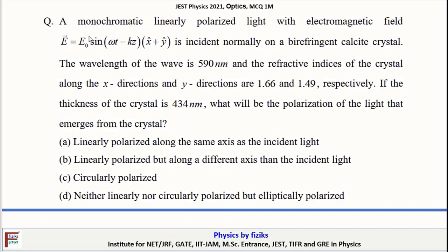A monochromatic linearly polarized light with electromagnetic field E = E0 sin(ωt)(x̂ + ŷ) is incident normally on birefringent calcite crystal. The wavelength of wave is 590 nanometer and refractive indices of the crystal along x direction and y direction are 1.66 and 1.49 respectively. If the thickness of the crystal is 434 nanometer, what will be the polarization of the light that emerges from the crystal? We have to determine what is the polarization of the light, whether it is linearly polarized, circularly polarized, or elliptically polarized.